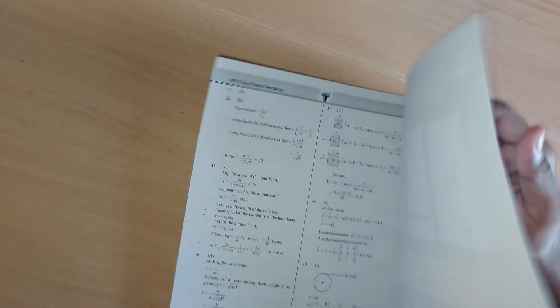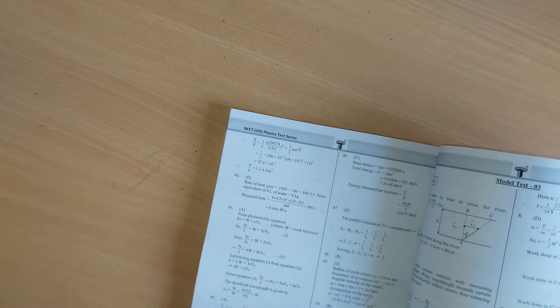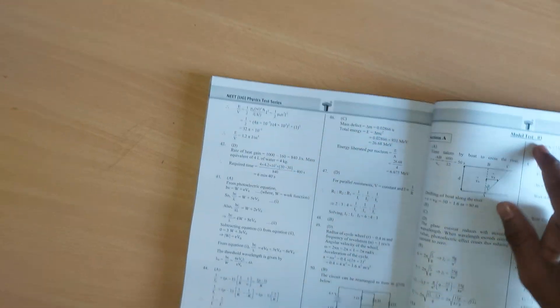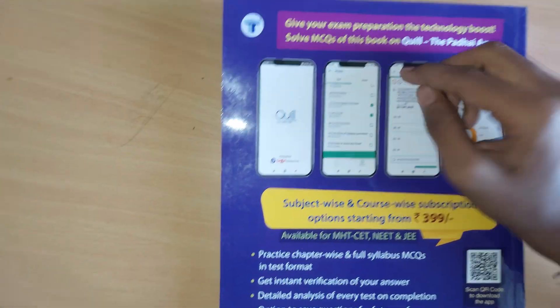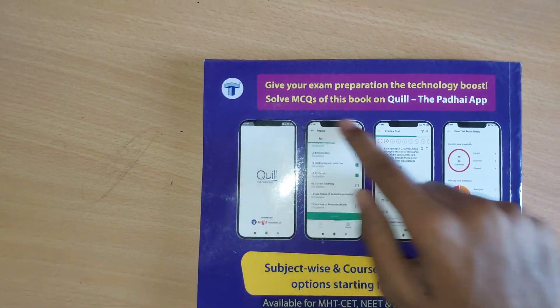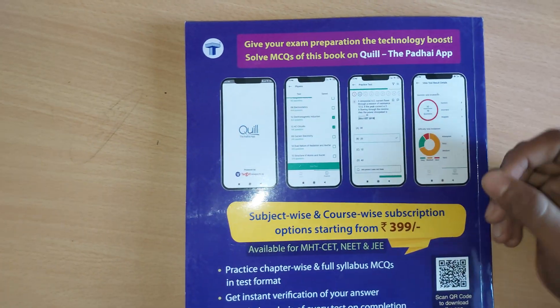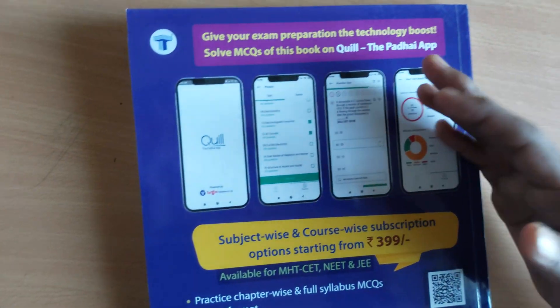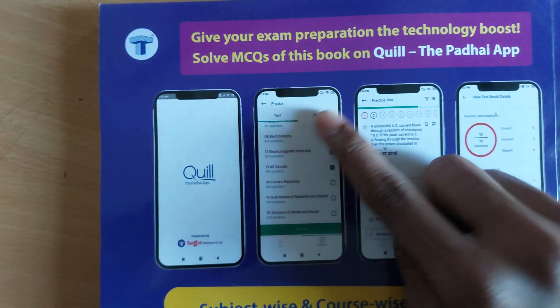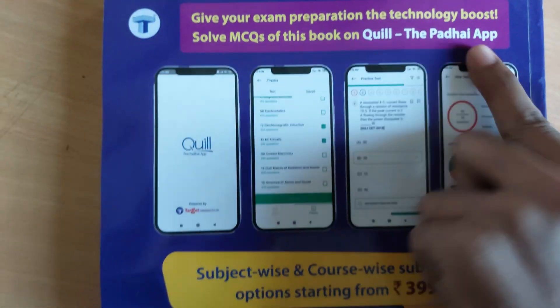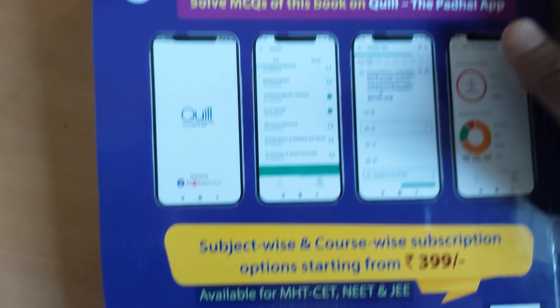Let's see the final pages of the book. These are the model test paper answers and explanations. After getting this book, we have some additional features that give you exam preparation the technology boost. Solve ambitious books on the Quill Padai app. The Target company has an app named Quill Padai.